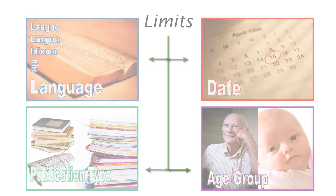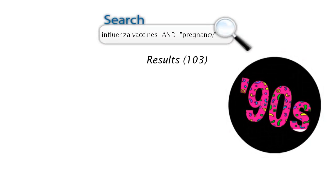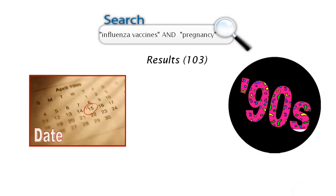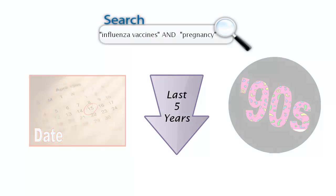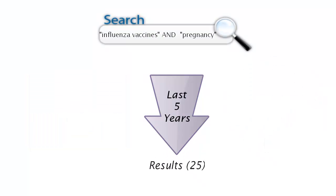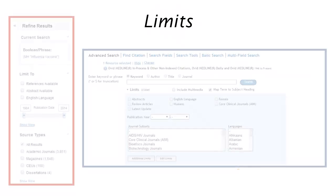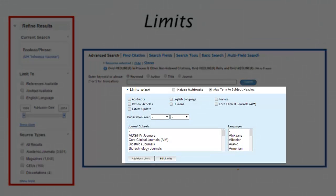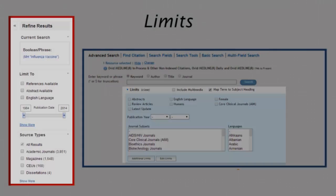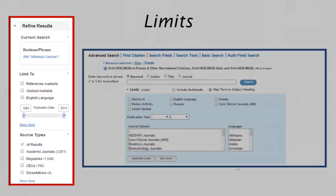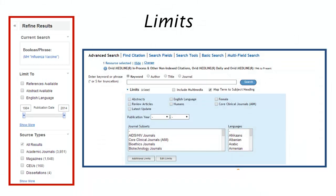For example, if our flu shots AND pregnancy search is bringing back a number of results from the 1990s, we may want to use the date limit to confine our search to the last five years, ensuring the evidence we are finding is up to date. Limits are usually accessible beneath the search history or in a toolbar along the side of the page. Recognizing why irrelevant results are appearing and using search limits to weed them out is key to efficient database searching.